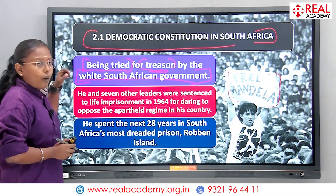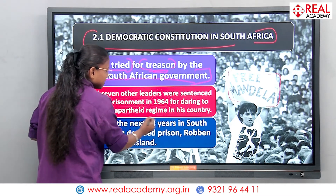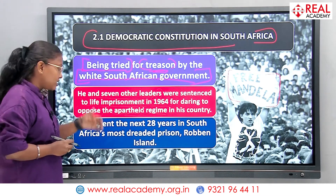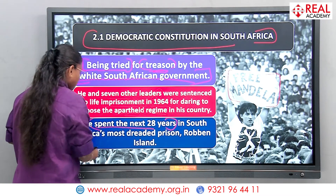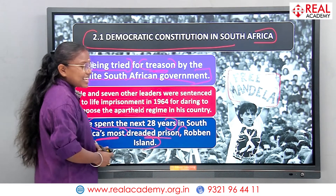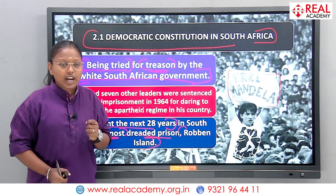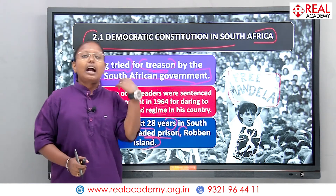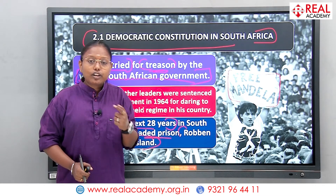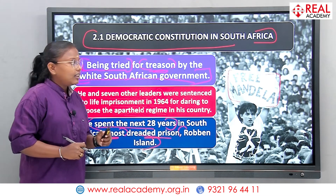Why did they end up behind bars? Because they raised questions and opposed the apartheid regime in their country. Mandela spent the next 28 years in South Africa's most dreaded prison, known as Robben Island — considered the most obnoxious and dreaded prison. People started agitating, raising questions, asking for their demands, trying to make sure that Mandela was freed. But it was almost 28 years.